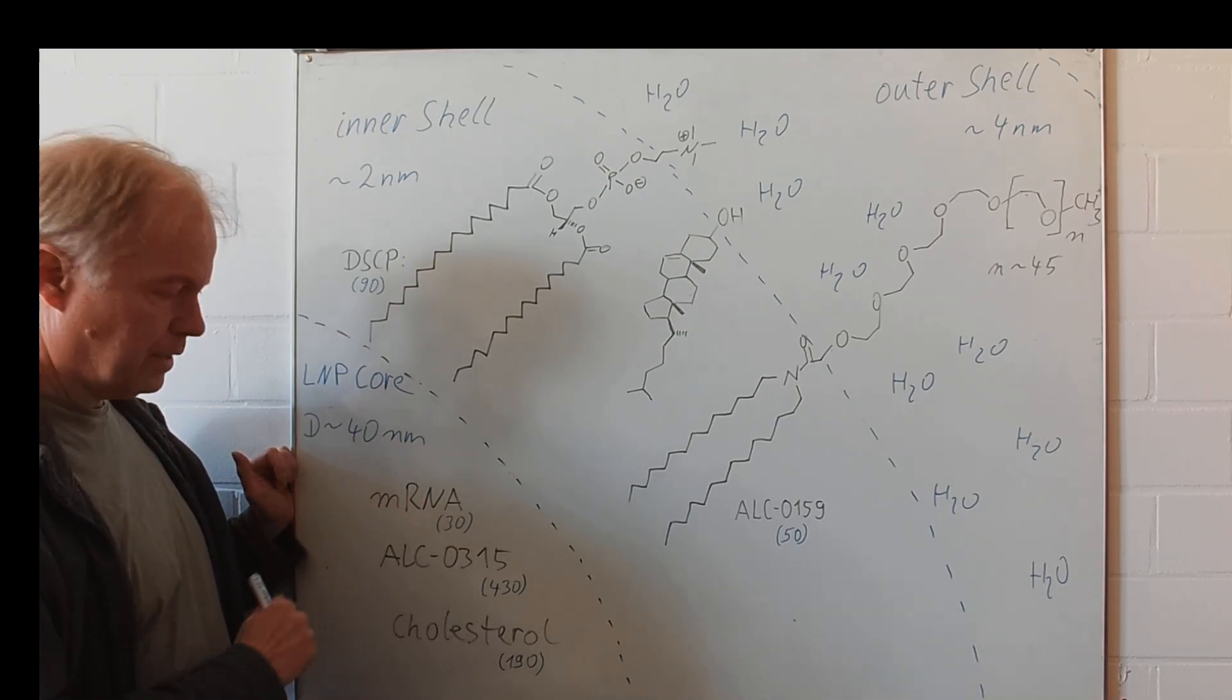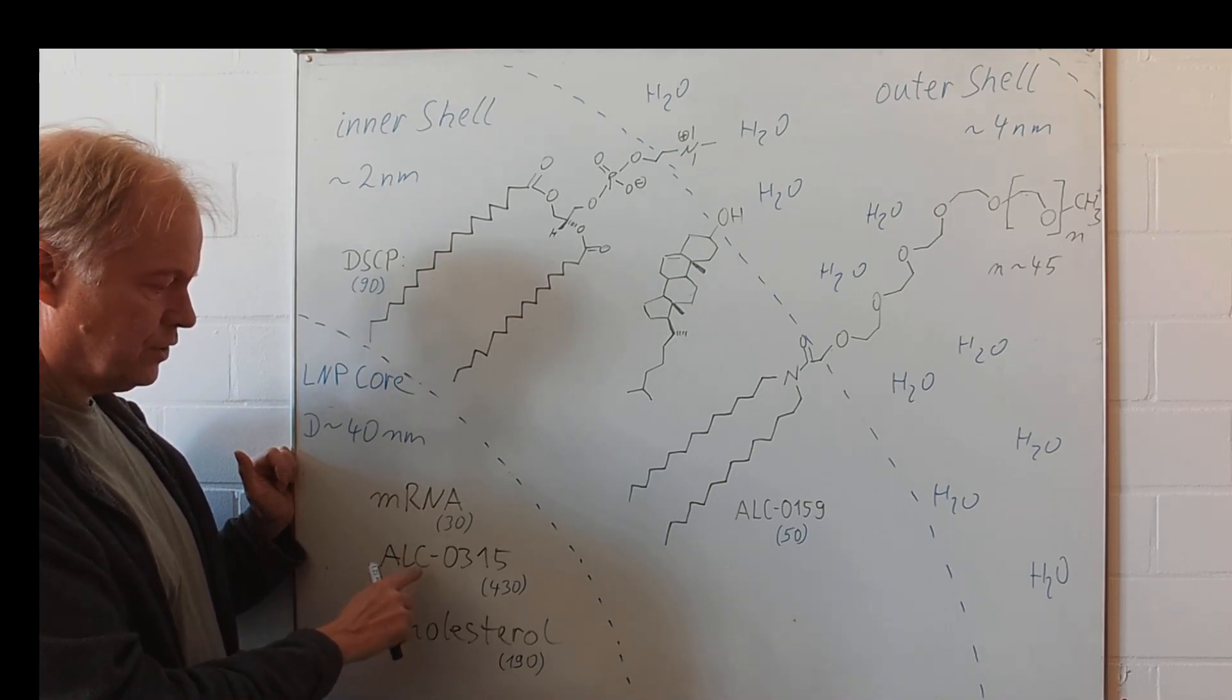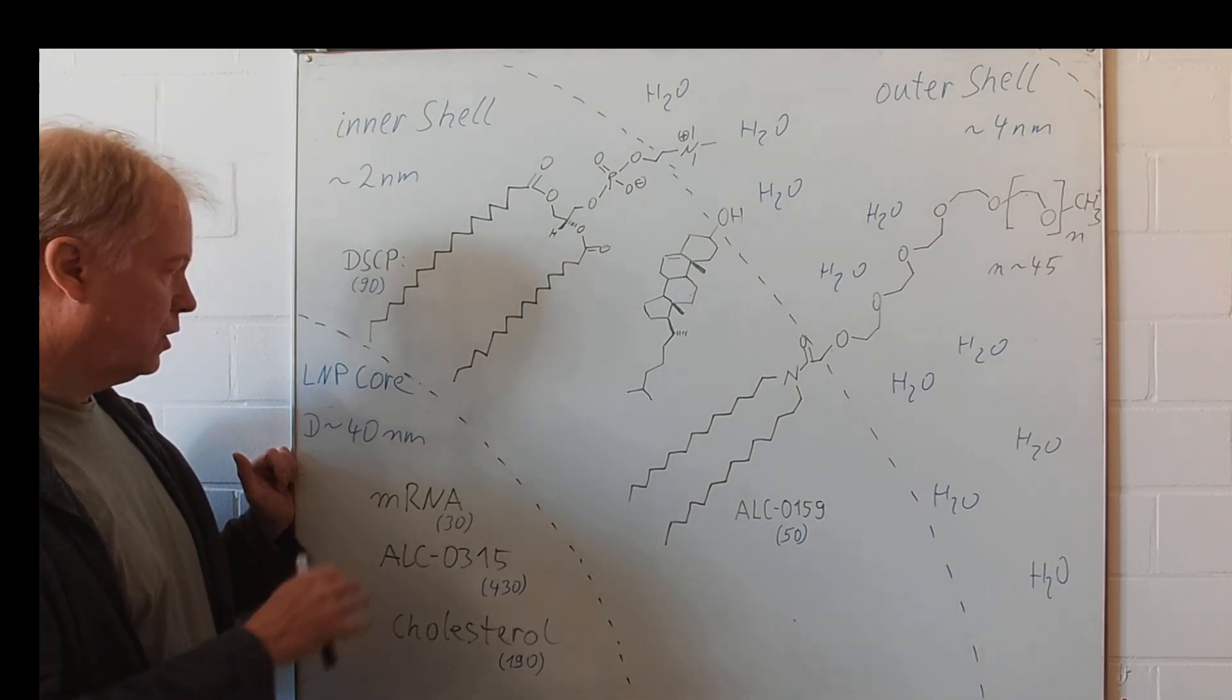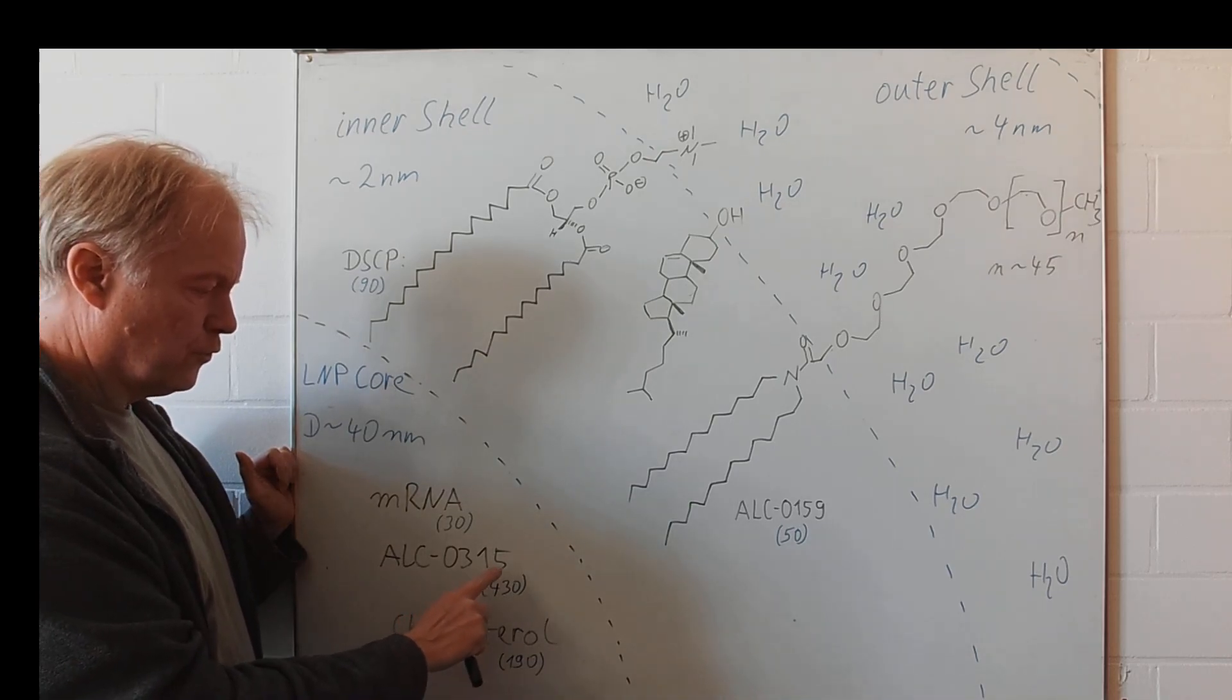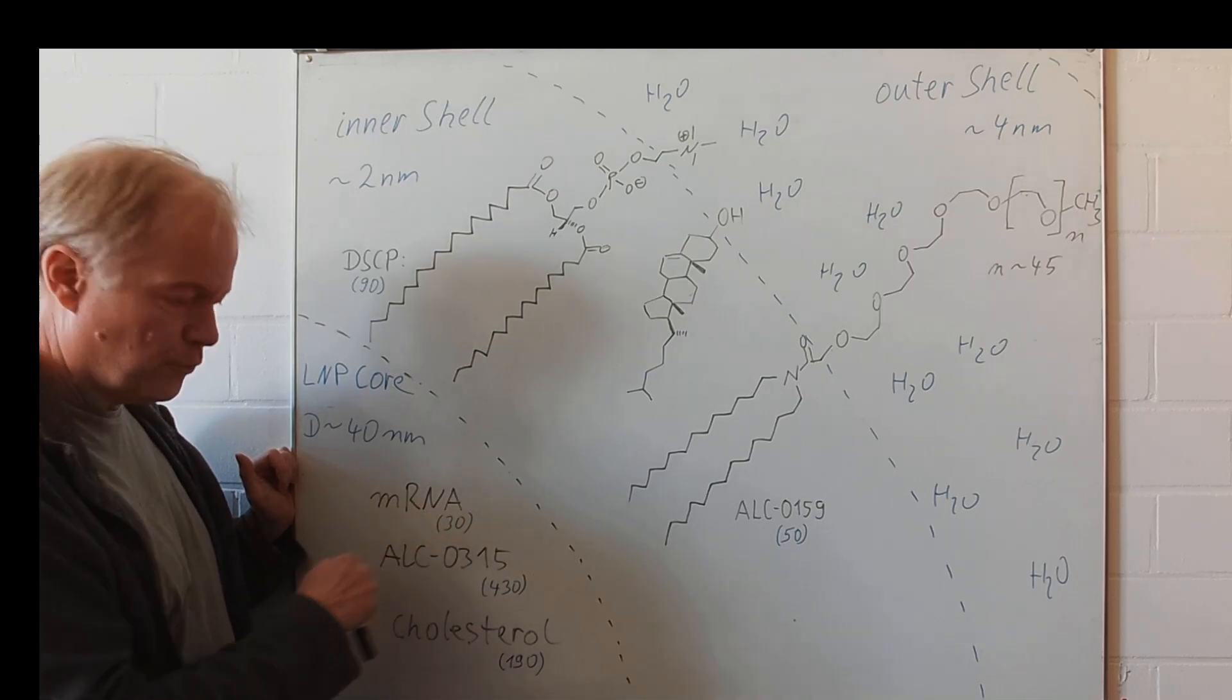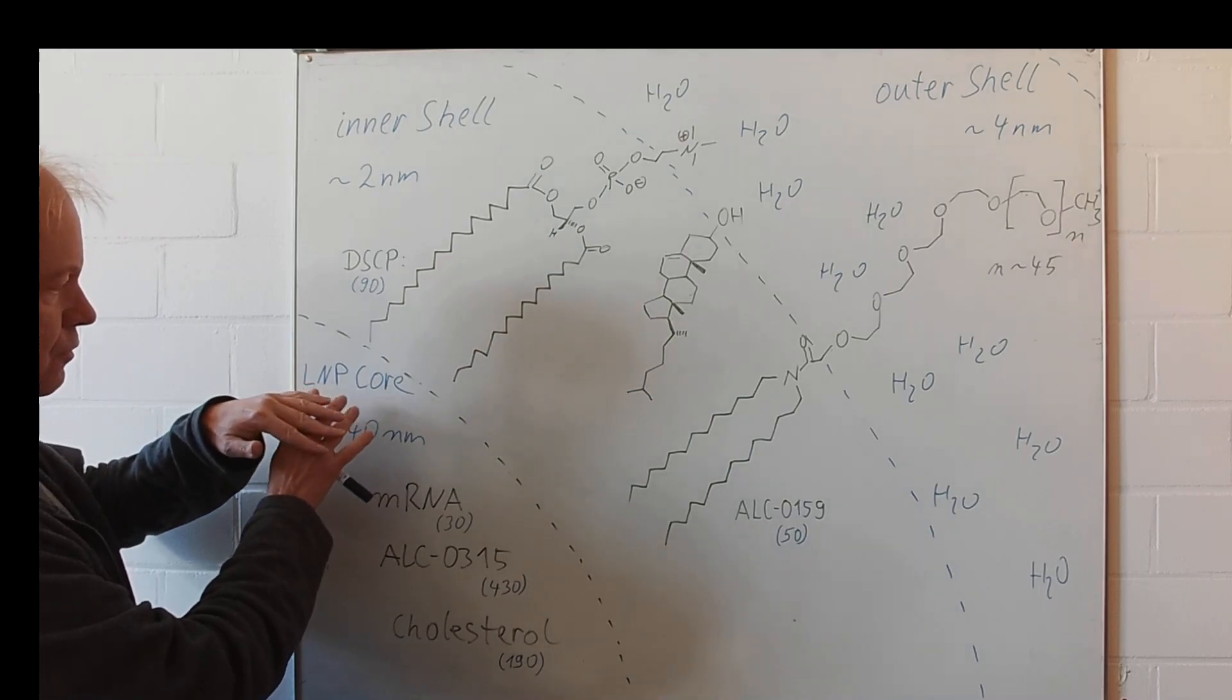the modified RNA, then the so-called cationic lipid, that is ALC0315. It is the main component of those nanoparticles with 430 micrograms per injection. The mRNA is only 30 micrograms. And then we have a substantial amount of cholesterol. This is the core.